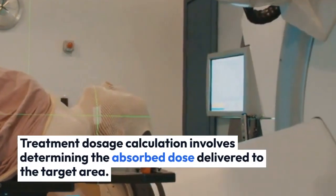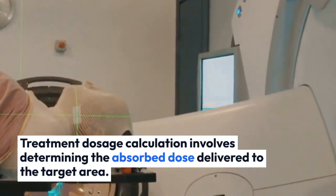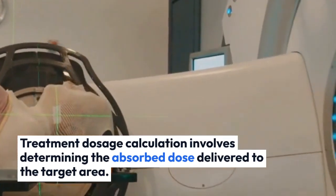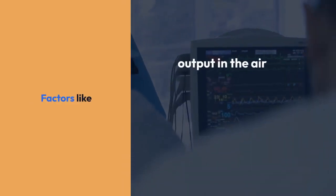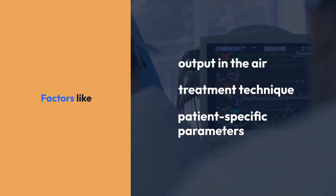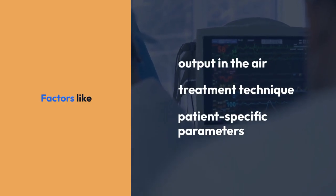Treatment dosage calculation involves determining the observed dose delivered to the target area. Factors like output in the air, treatment technique, and patient-specific parameters are considered.